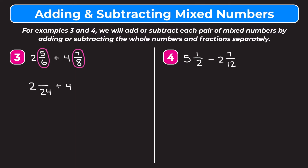We want to change both of our fraction parts to have a denominator of 24. We're going to keep this 4 as it is in the second fraction and change the denominator of the fraction part into a 24. We think how did we get from 6 to 24? We multiplied by 4, so 5 times 4 is going to give us 20. So we changed 2 and 5 sixths into 2 and 20 twenty-fourths. And how do we get from 8 to 24? Well 8 times 3 is 24, so we multiply our numerator of 7 by 3. And 7 times 3 is 21. So now we have 2 and 20 twenty-fourths plus 4 and 21 twenty-fourths.